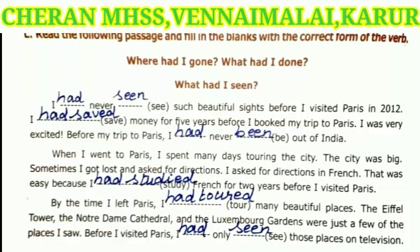Next exercise: read the following passages and fill in the blanks with the correct form of the verb. This is past perfect tense. Past perfect tense means had + past participle — an action completed before a past action. I had never seen such beautiful sights before I visited Paris in 2012. The first answer is had seen, S-E-E-N.